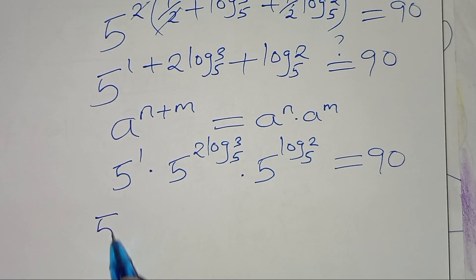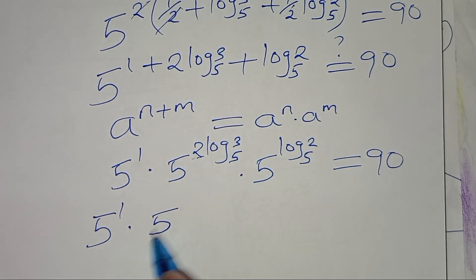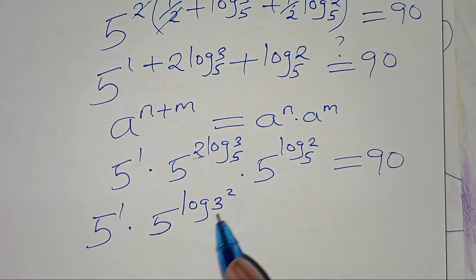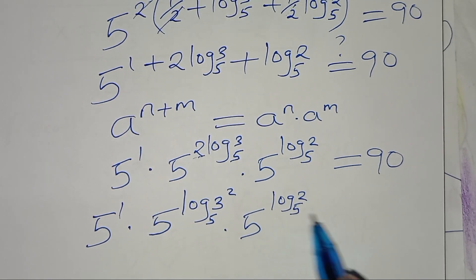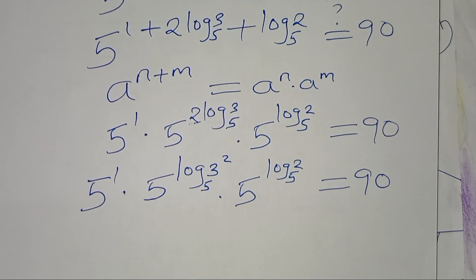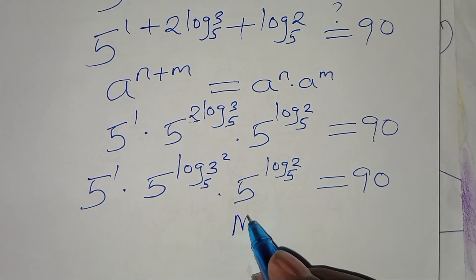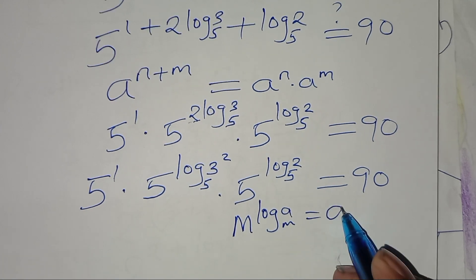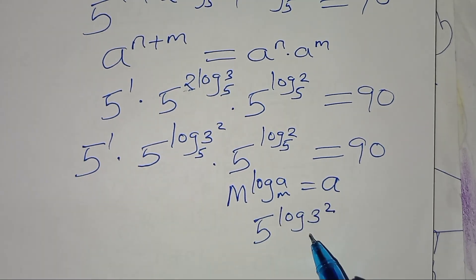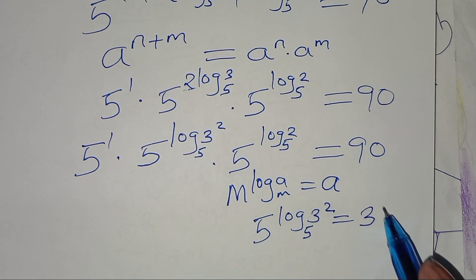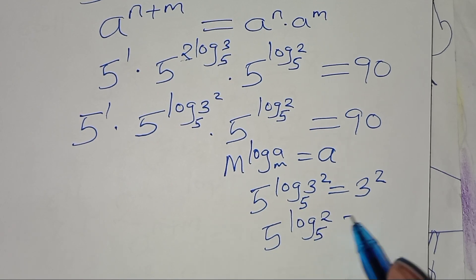This implies that this is 5 to the power 1 times 5 to the power (2 log base 5 of 3). Now, 5 to the power (2 log base 5 of 3) can be expressed as 5 to the power log base 5 of 3 squared, multiplied by 5 to the power log base 5 of 2. Using the property that m to the power log base m of a equals a, we find that 5 to the power log base 5 of 3 squared gives 3 squared, and 5 to the power log base 5 of 2 gives 2.